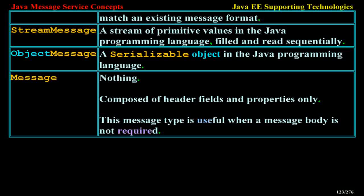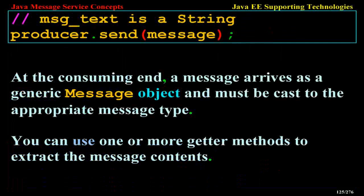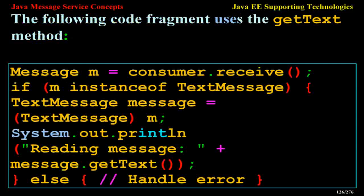The JMS API provides methods for creating messages of each type and for filling in their contents. For example, to create and send a text message: TextMessage message = session.createTextMessage(); message.setText(msgText); producer.send(message). At the consuming end, a message arrives as a generic Message object and must be cast to the appropriate message type. You can use getter methods to extract the message contents. For example: Message m = consumer.receive(); if (m instanceof TextMessage) { TextMessage message = (TextMessage) m; System.out.println("Reading message: " + message.getText()); }